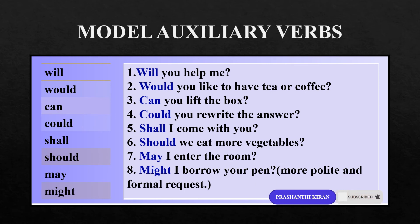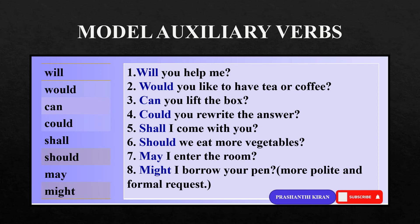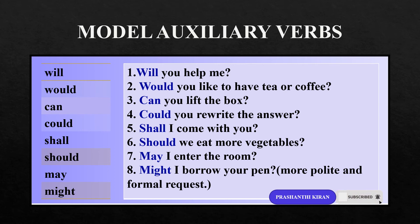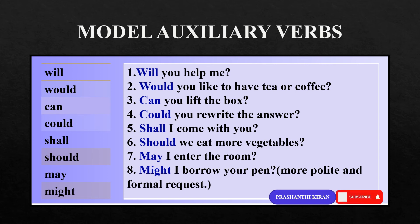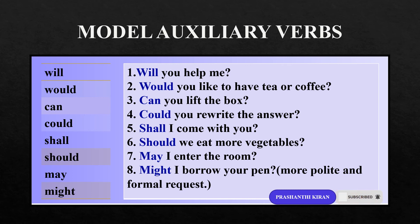Let us now learn how modal auxiliary verbs are used to form questions. Modal auxiliary verbs like will, would, can, could, shall, should, may, and might are used to form questions. Examples: Will you help me? Would you like to have tea or coffee? Can you lift the box? Could you rewrite the answer? Shall I come with you? Should we eat more vegetables? May I enter the room? Might I borrow your pen? Might is the more polite and formal request.